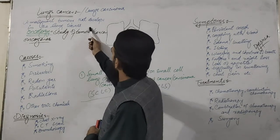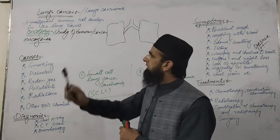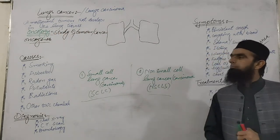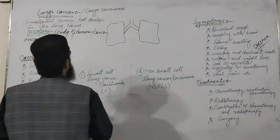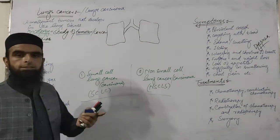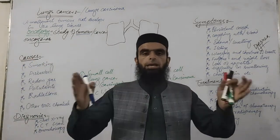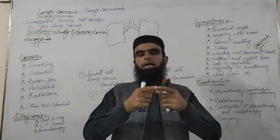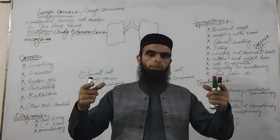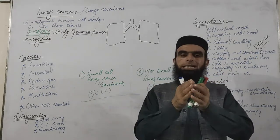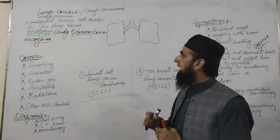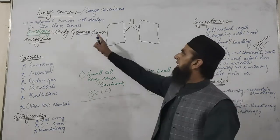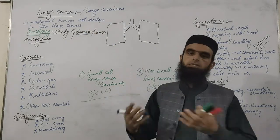Tumor is a form of cancer and tumor is further of two kinds. Tumor is an abnormal increase in the size and number of cells. Whenever we talk about increase in the size of the cell it is called hypertrophy, and whenever we talk about increase in number of cells it is called hyperplasia. So hypertrophy and hyperplasia result in outgrowths like tumors, causing cancer.